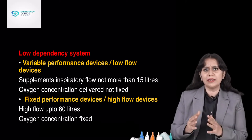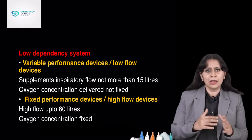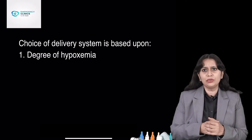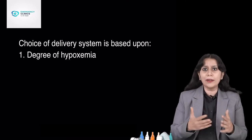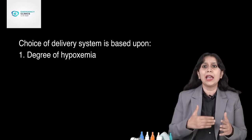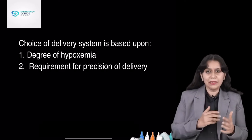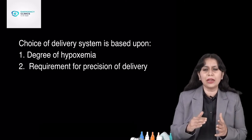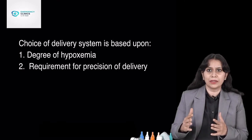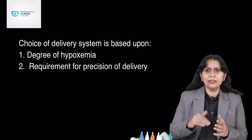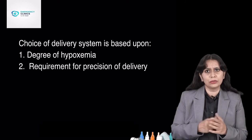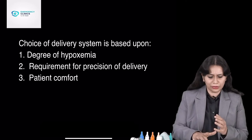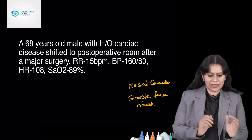So how do I choose the device? I will discuss some case-based scenarios and show you the devices as well. We choose the devices according to the requirement — that is, how much hypoxemia is present in the patient and how much oxygen concentration we require. Then, the precision of delivery: if I need a fixed FiO2, I will use high flow fixed FiO2 delivering devices, like in COPD patients. It also depends upon patient comfort and cost.